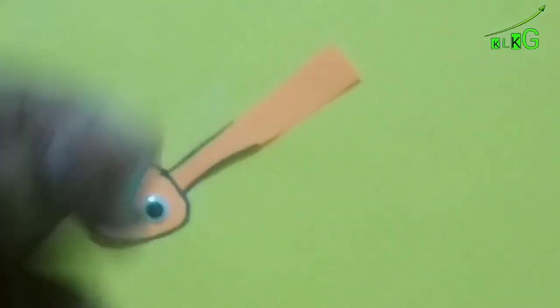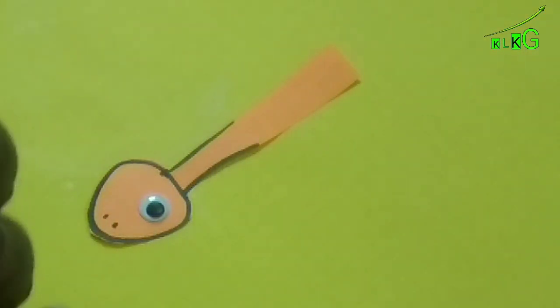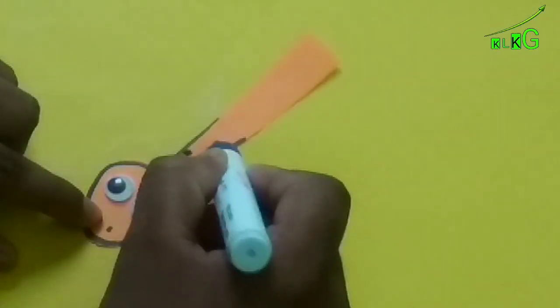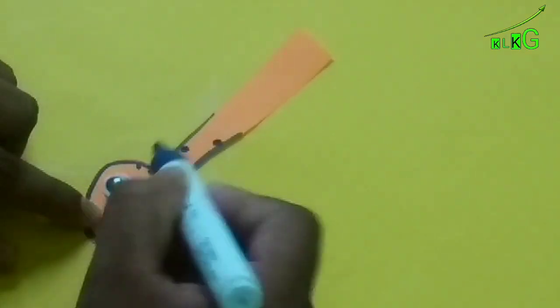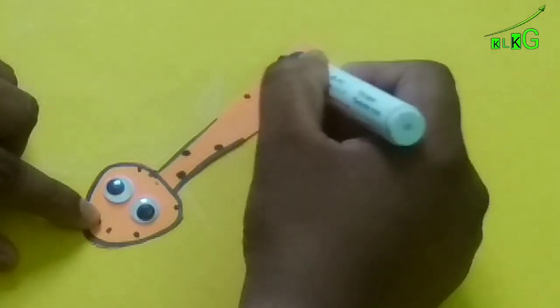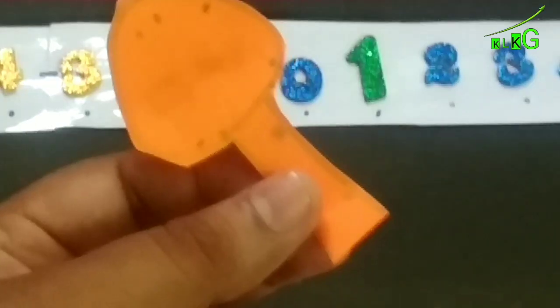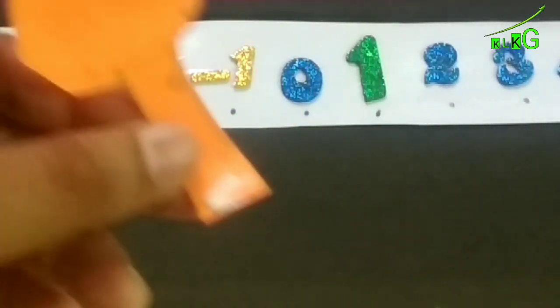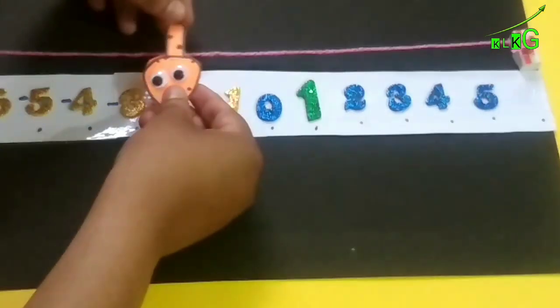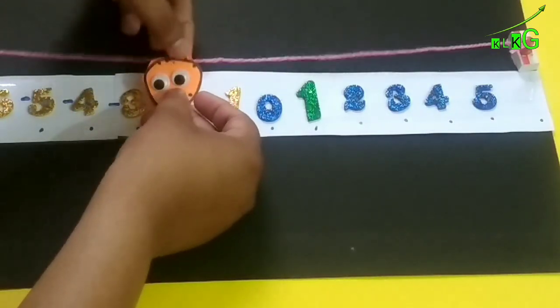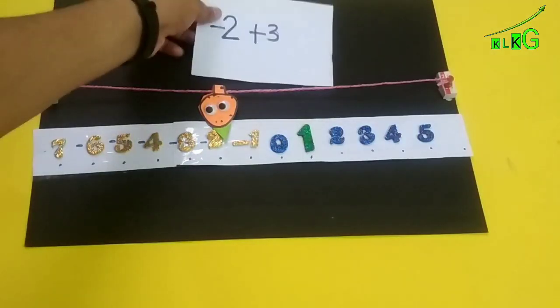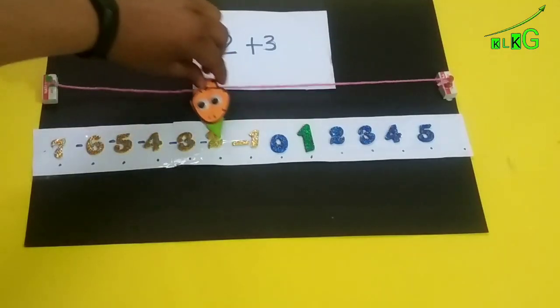You can see our number line is ready. Now we will make a small pointer. I made a small snake like this and just pasting its two eyes. At the back of that paper, I'll just put a little bit fevicol and just ring it and set it like this so that it can move.